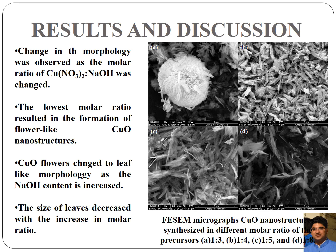Scanning electron microscopy of the different copper oxide nanostructures synthesized at different molar ratios was also done. When the molar ratio was 1:3, a flower-like morphology of copper oxide nanostructures was obtained. As the molar ratio was changed and the amount of sodium hydroxide was increased, the flower-like morphology broke up and we got leaf-like morphology. As the sodium hydroxide content increased further, the size of the leaves also started decreasing.